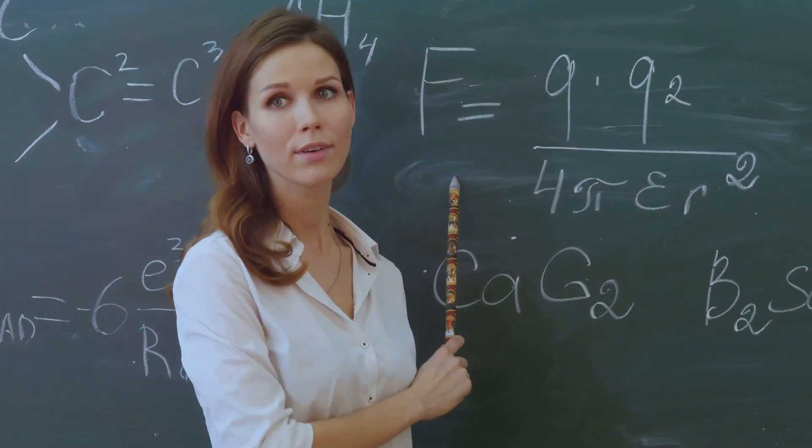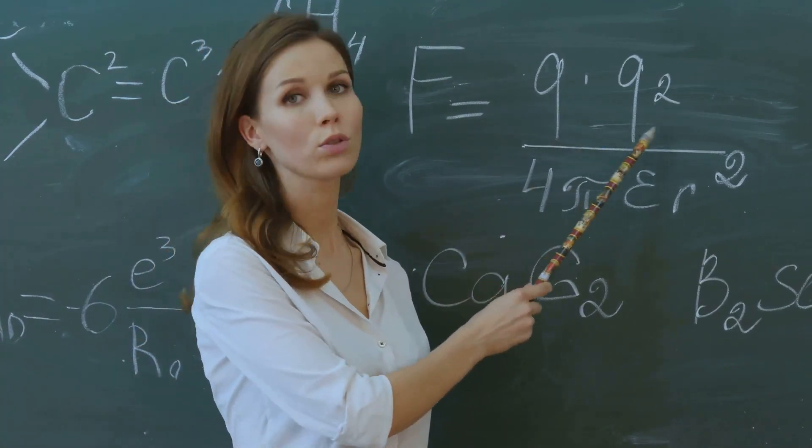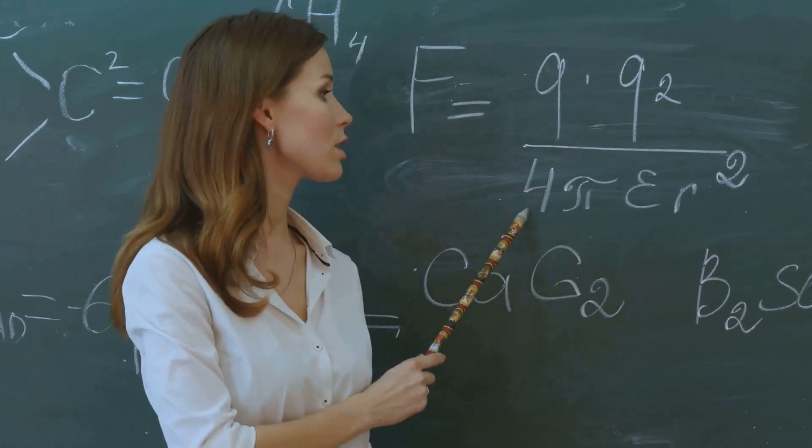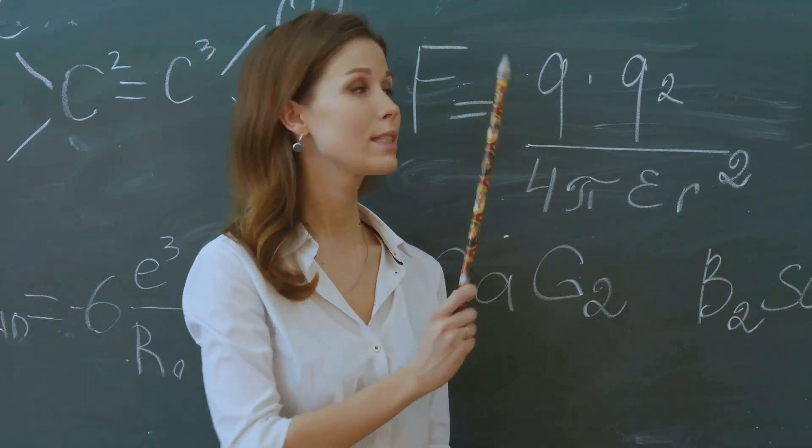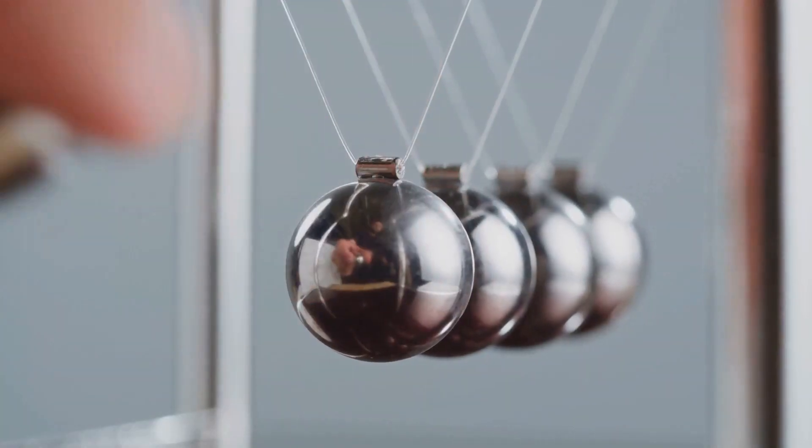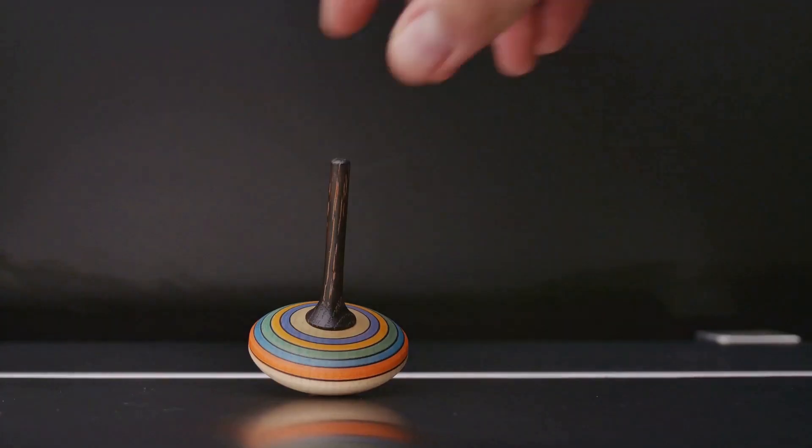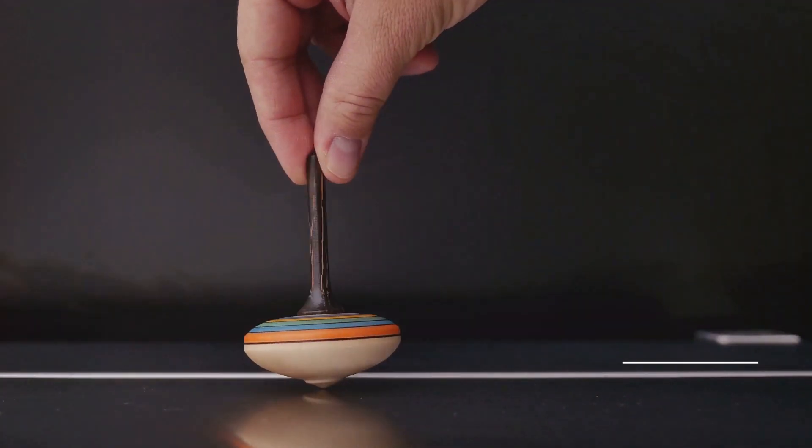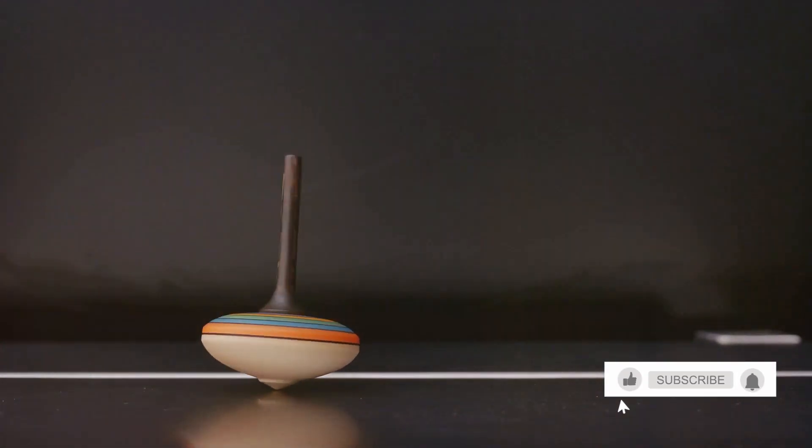But that's not all. We also have laws like the conservation of momentum, which says that the total momentum of a system remains constant if no external forces are acting on it, and the conservation of angular momentum. These laws explain why energy is always conserved and why spinning objects keep spinning.